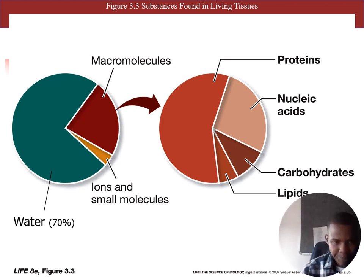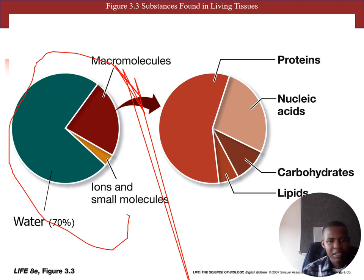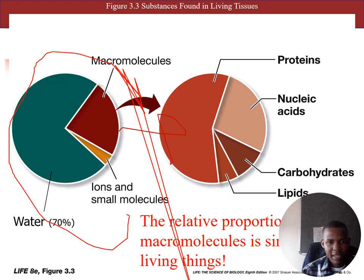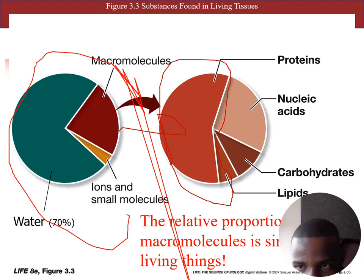As you can see from this representation of the human body, inside the human body water takes up 70 percent, micro-molecules take up a certain percentage, and ions and molecules take up another percentage. Among those micro-molecules, proteins take up the larger portion — they occupy a lot of space compared to other micro-molecules.